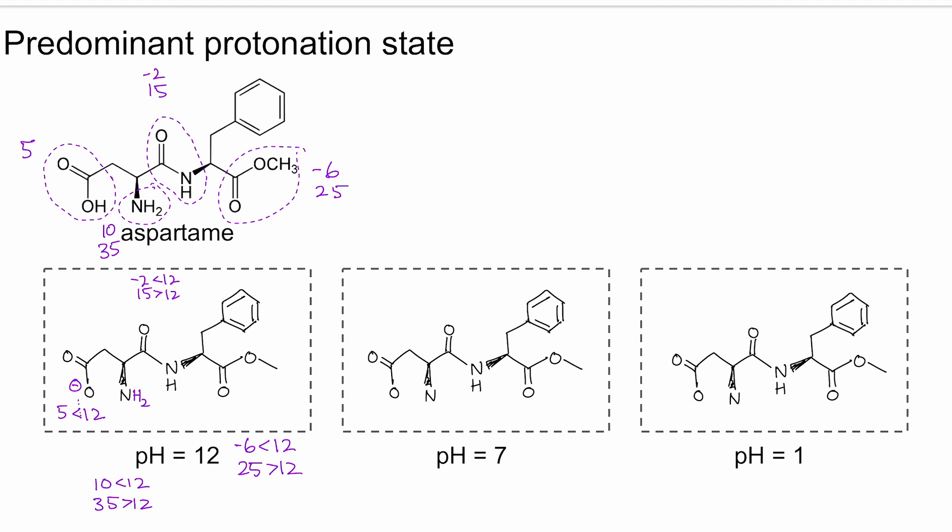For pH of 7, 5 is less than 7. So we would deprotonate the carboxylic acid. 10 and 35 are both greater than 7. So we would take those two Ps and protonate our amine, giving the nitrogen a plus charge. For the amide, negative 2 is less than 7, and 15 is greater than 7. So we would just leave it as is in its neutral state. And then for the ester, negative 6 is less than 7, and 25 is greater than 7. So we also leave that ester in its neutral state.